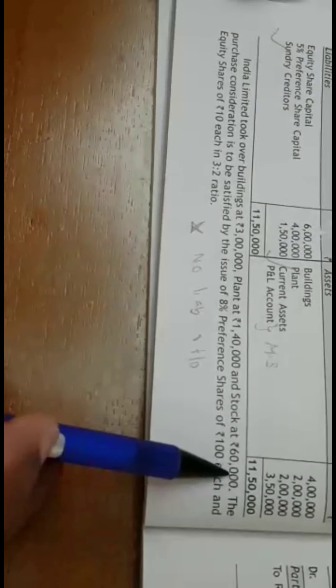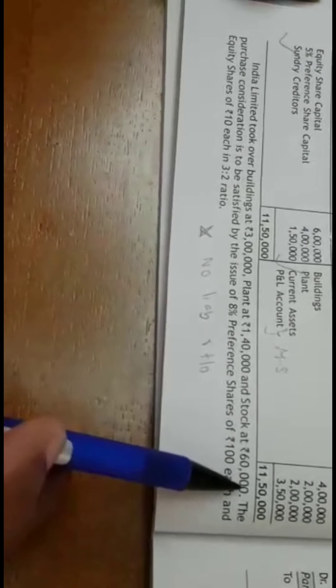India Limited took over buildings at Rs. 3 lakh, plant at Rs. 1 lakh 40,000, and stock at Rs. 60,000. This is the market value which we have to consider while calculating PC.